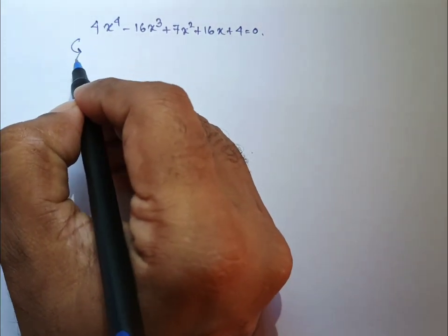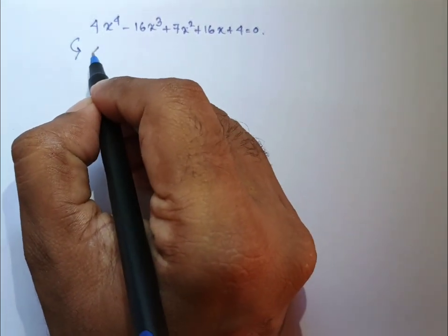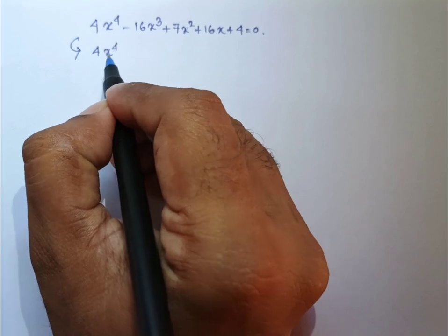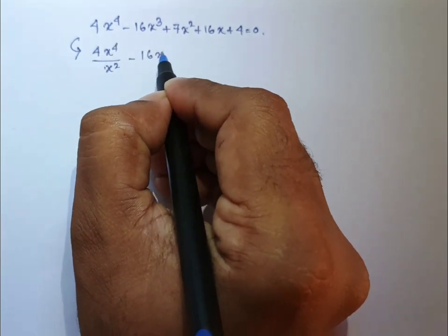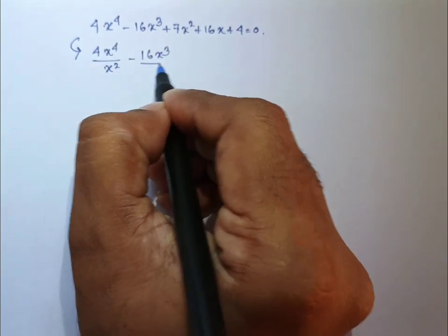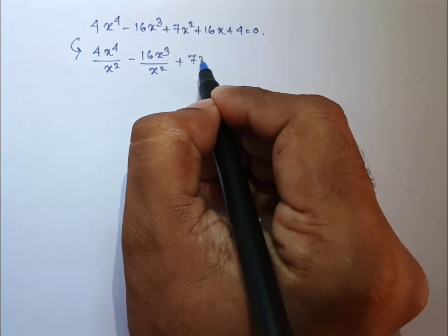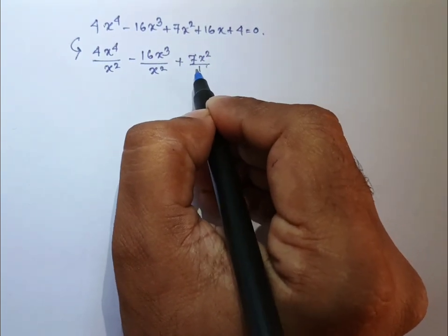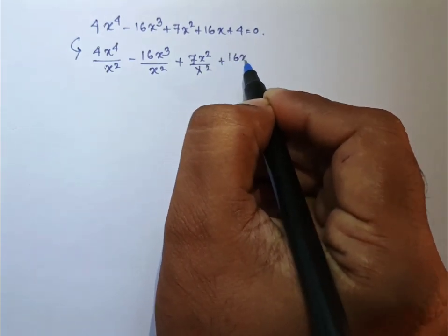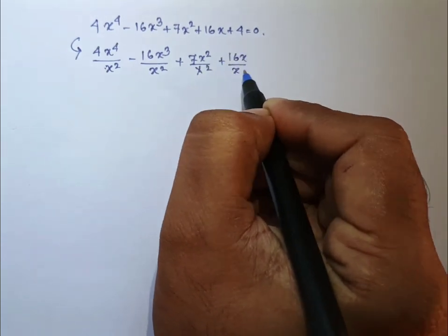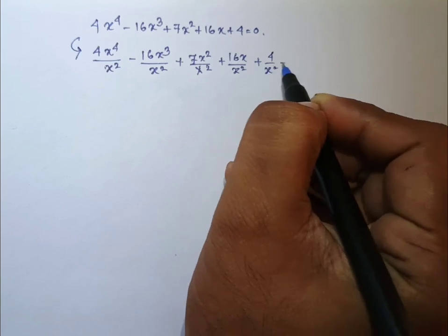To solve this problem, I am first dividing the entire expression by x square. Then 4x to the power 4 by x square minus 16x cube by x square plus 7x square by x square plus 16x by x square plus 4 by x square will be 0.